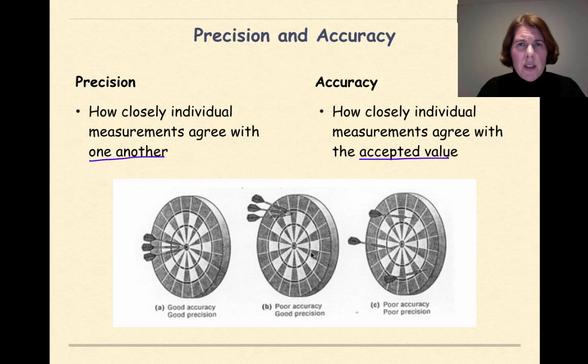One way of showing this as an example is through the use of a dartboard. If our accepted value that we're trying to achieve is a bullseye, then this first example that we see right here demonstrates both good accuracy and good precision. It's good accuracy because all the darts are hitting our bullseye in the middle. It's good precision because all the darts are going to the same place. In other words, this person's a pretty good dart player.